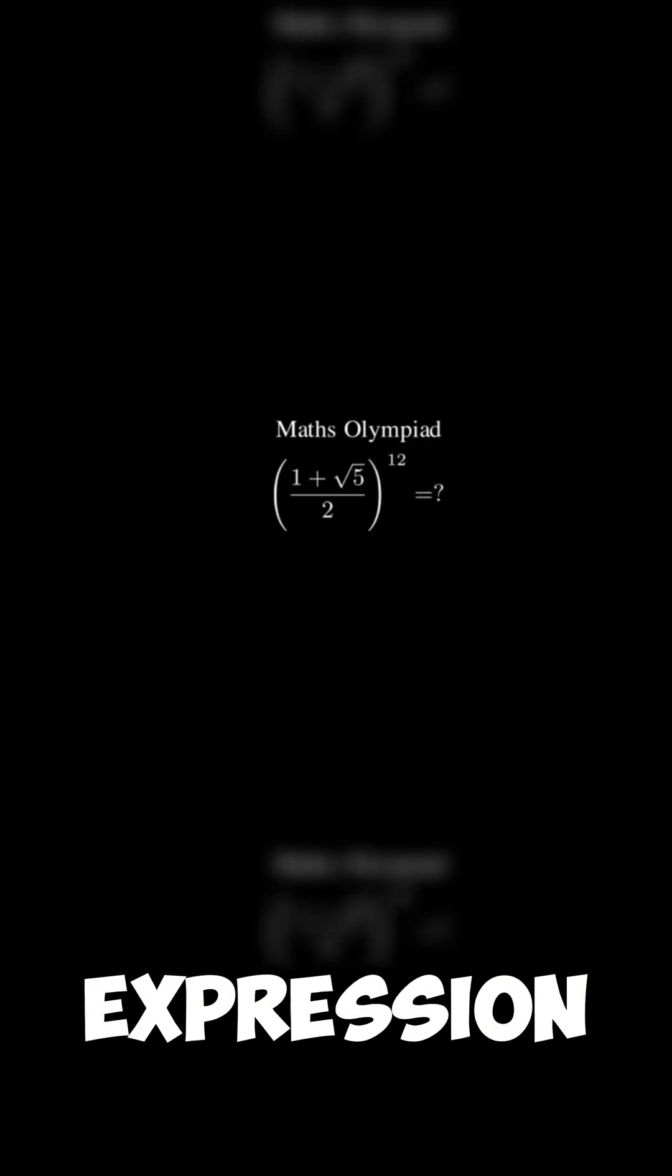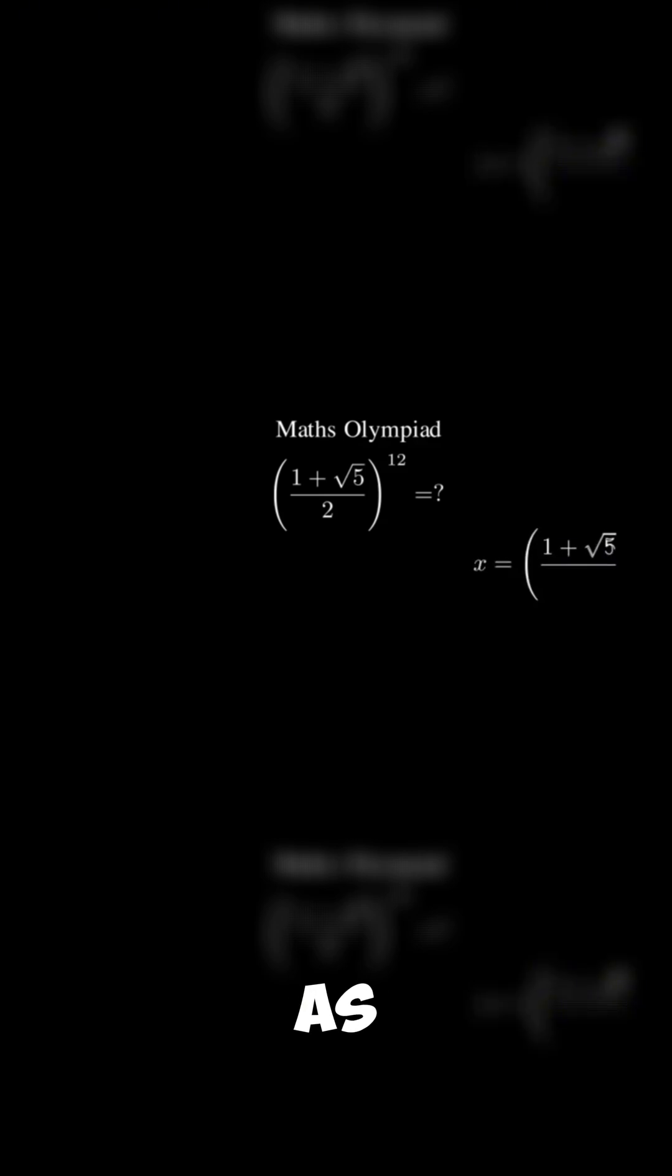What we want to do is simplify this expression. We can make it easier by calling x as 1 plus square root of 5 over 2, and our goal is to find x power of 12.